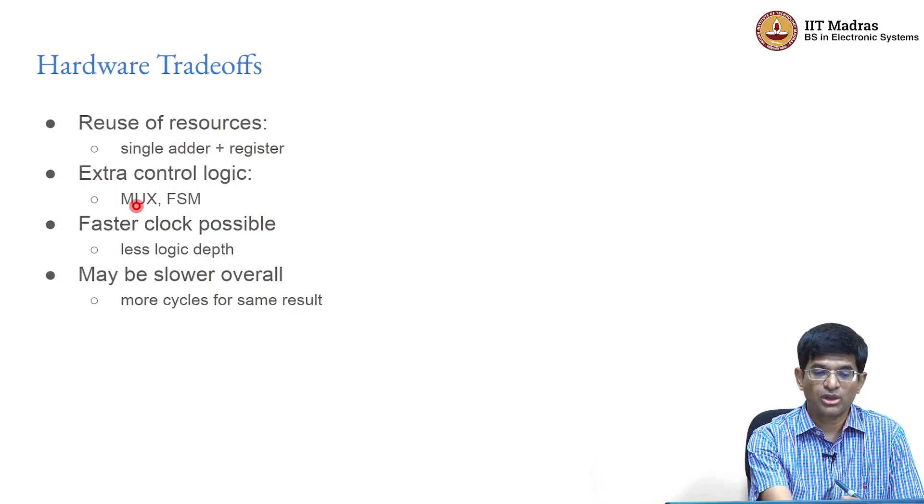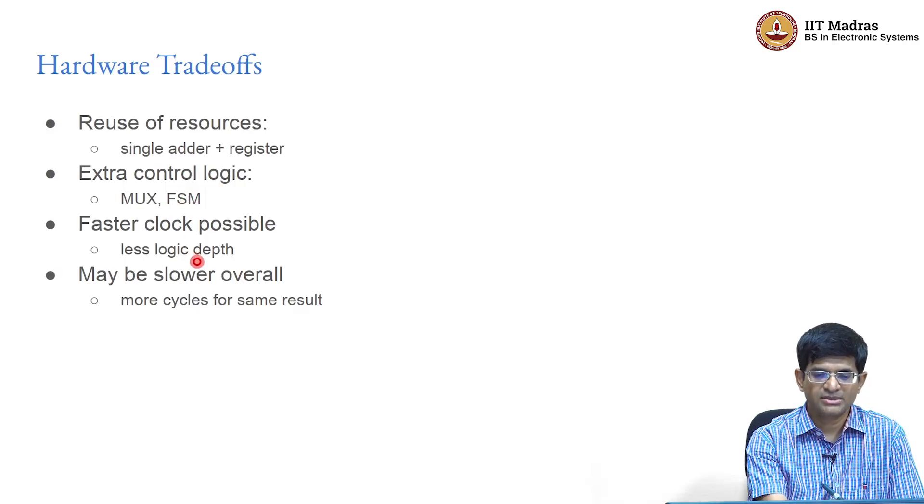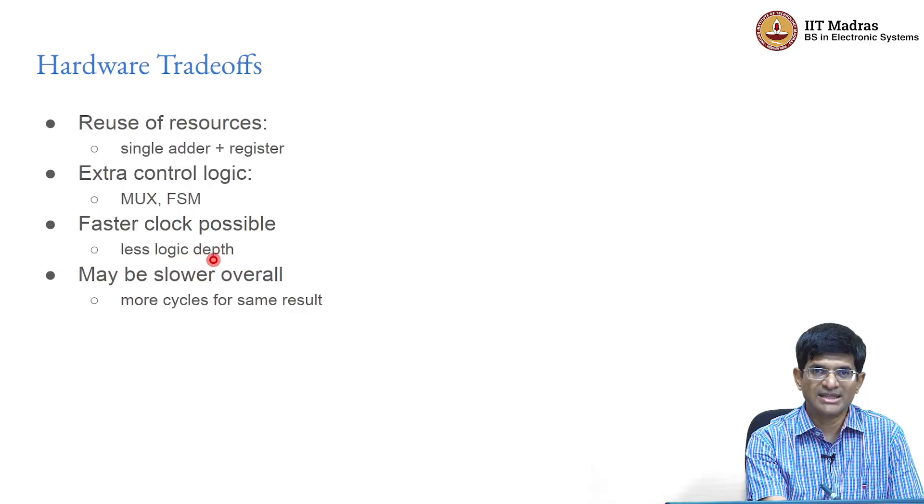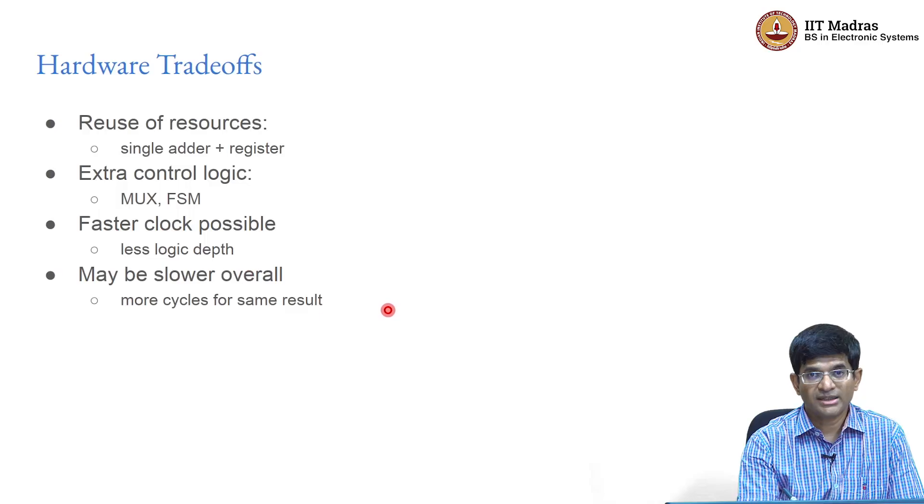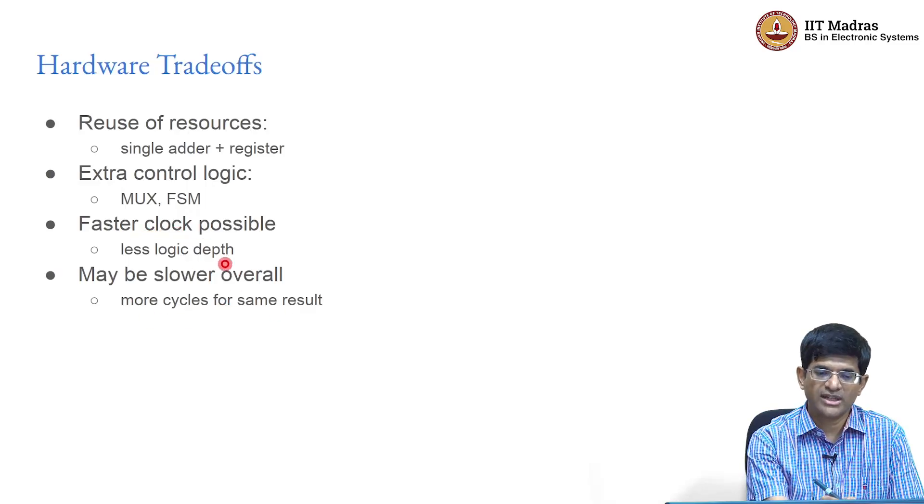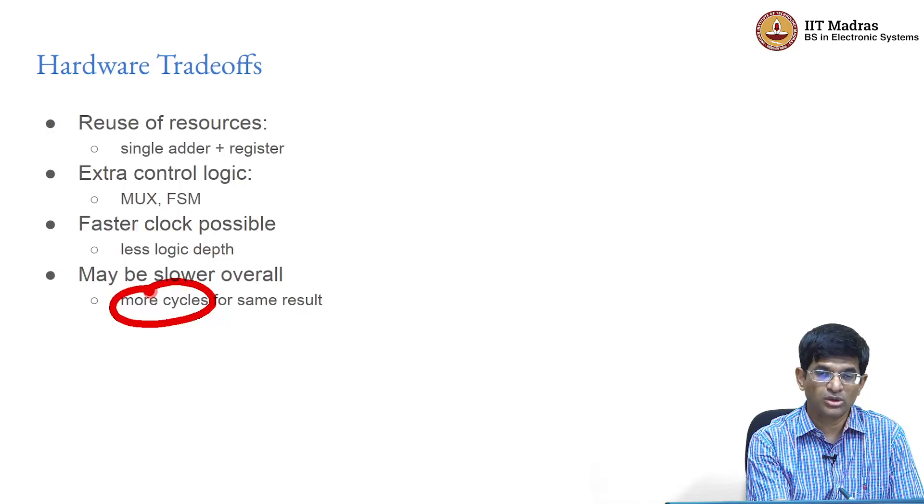You do have extra control logic, you have more multiplexers, you have a finite state machine controller, but the interesting thing is the logic depth that you have is probably going to be less. You do not have to worry about for example, a tree of adders. You pretty much have like one adder and one register. So it is very often possible to operate with faster clocks. On the other hand, it is also entirely possible that this system is going to be overall slower for the same reason. The individual clock was faster, but on the other hand it takes multiple clock cycles to get the same result. That gives us more time required for performing the computation using this approach.